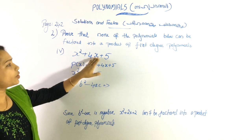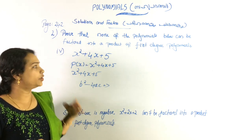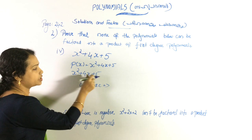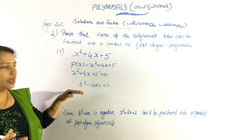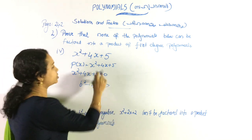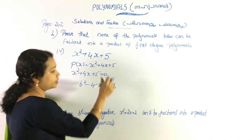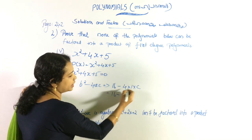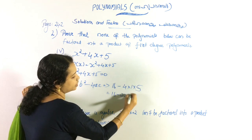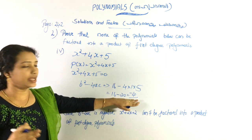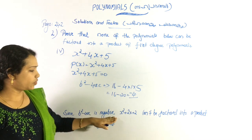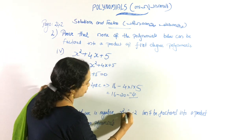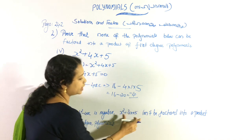For the next polynomial, x² + 4x + 5 = 0. We calculate b² - 4ac: here b=4, so b² = 16. Then 16 minus 4 times 1 times 5 equals 16 - 20 = negative 4. Since b² - 4ac is negative, this polynomial also cannot be factored.